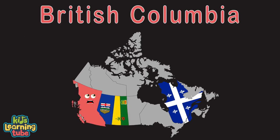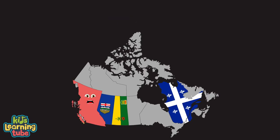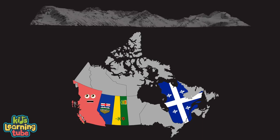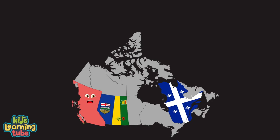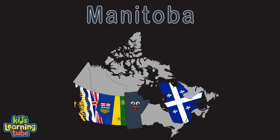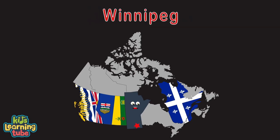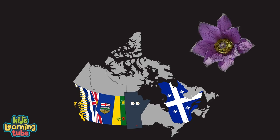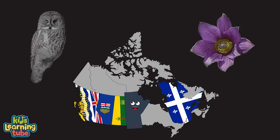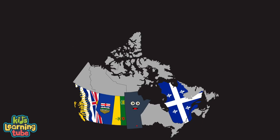I'm British Columbia — Victoria is my capital. Canada's westernmost province, touching the Pacific coast. I have lots of mountain ranges; Whistler Mountain is my most famous. I'm Manitoba — my capital's Winnipeg. My provincial flower is the house flower, great grey owl is my bird. I have Arctic tundra in the north and southern farmland.